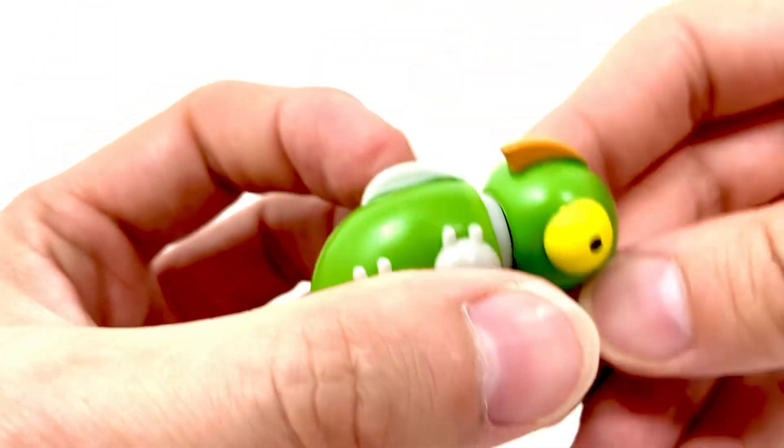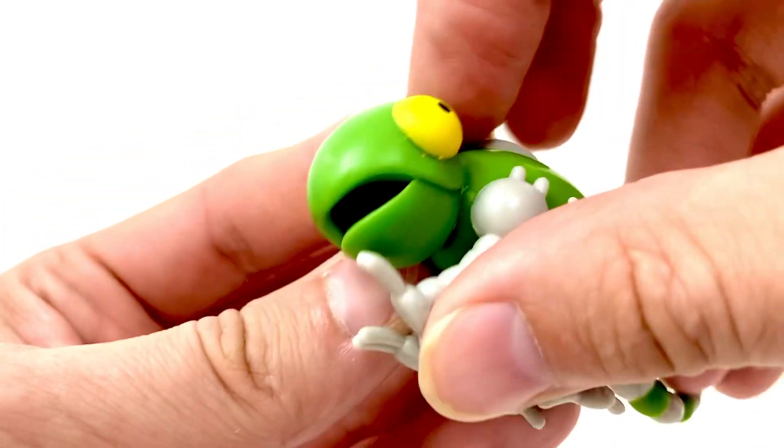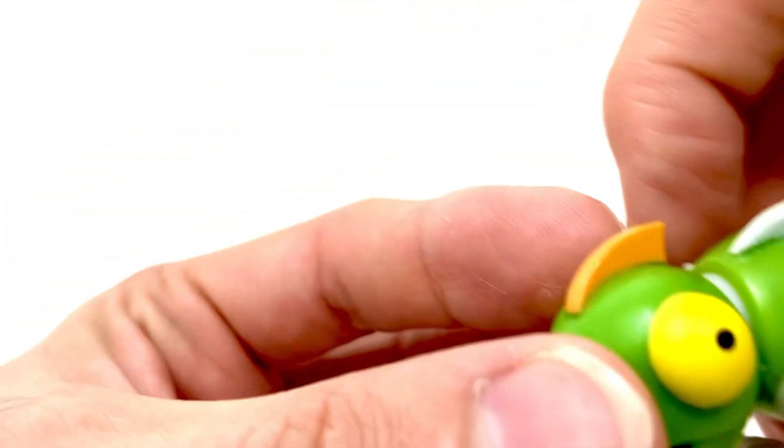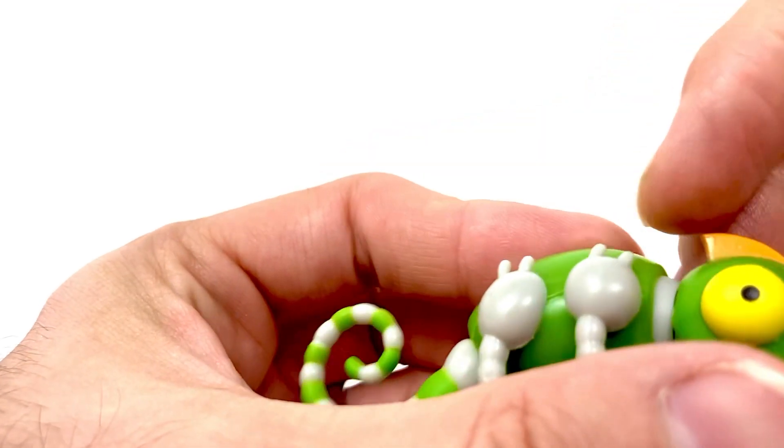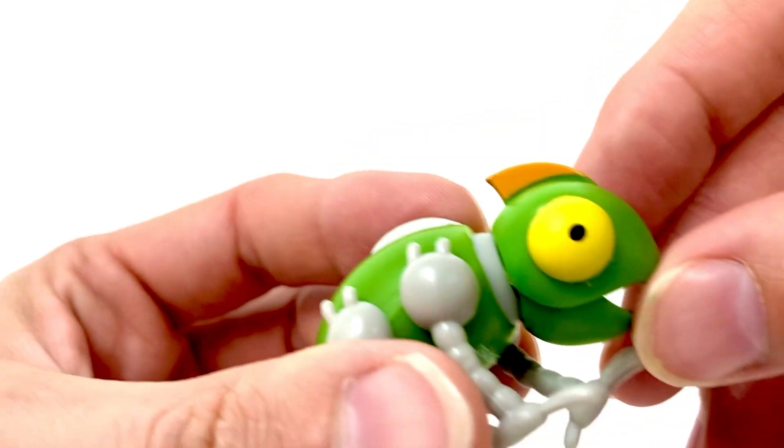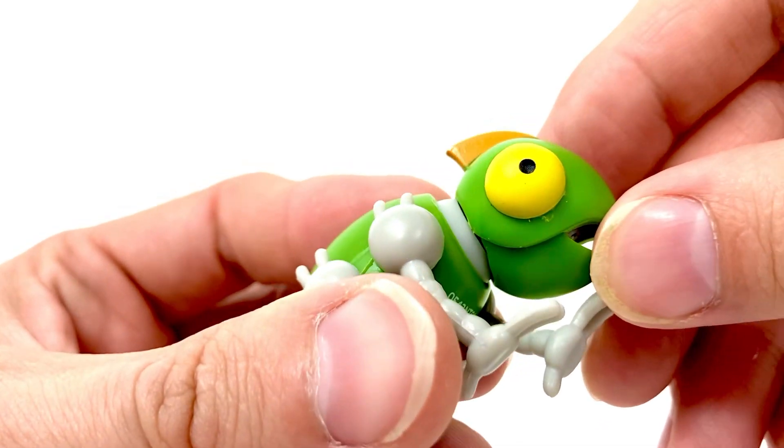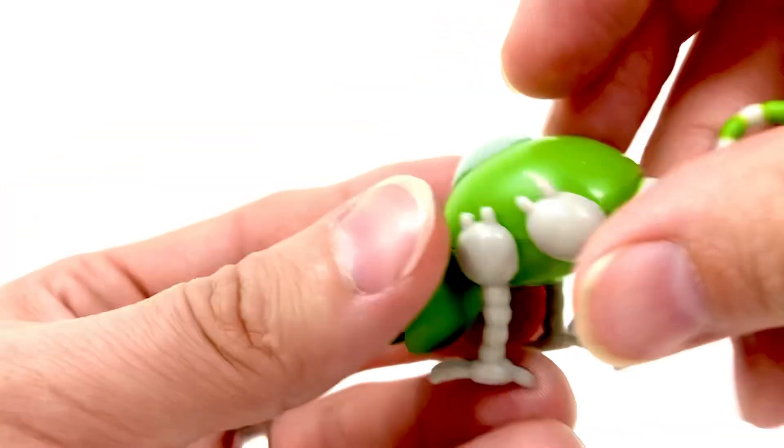A little sloppy around the eyes, nothing too bad though. This little mohawk on his head is painted pretty well, and that's actually done in a glossy paint whereas the rest of the paint on the body is a matte paint.